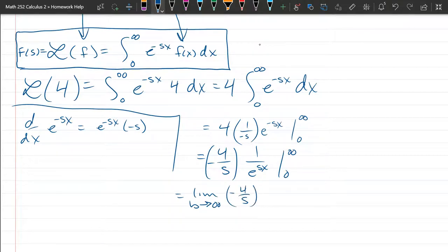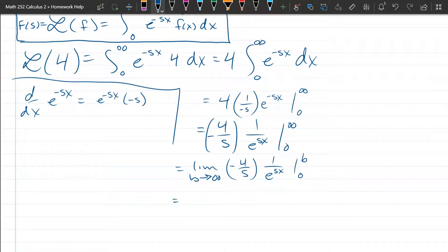negative 4 over s, 1 over e to the sx from 0 to b. Now my s looks like a 5, just be careful it's an s. If I write my 5, I make sure it has some sharp pointers, so my 5 looks a bit different, but my s might look just like your 5, so be careful. All right, so we're going to plug in the b and the 0, and I forgot to write limit when b approaches infinity. 1 over e to the bx minus 1 over e to the 0 times s, which will be e to the 0.